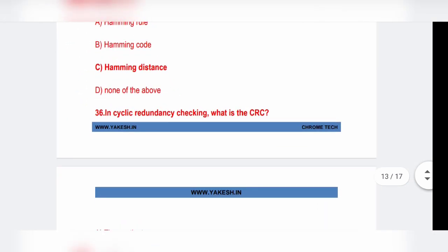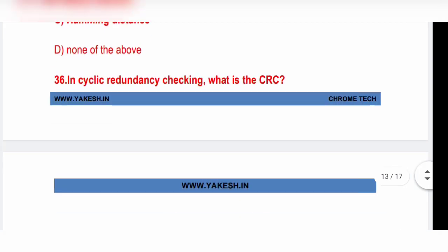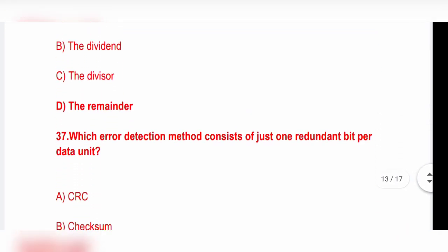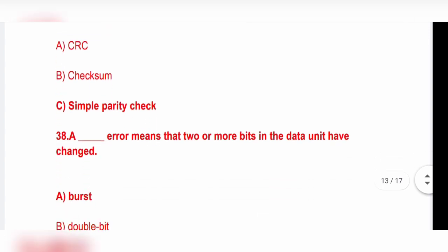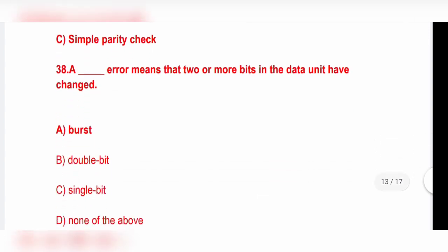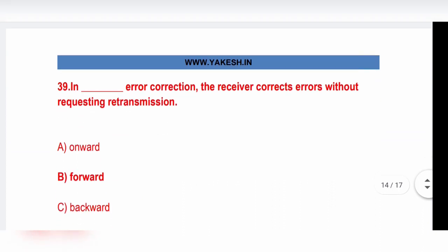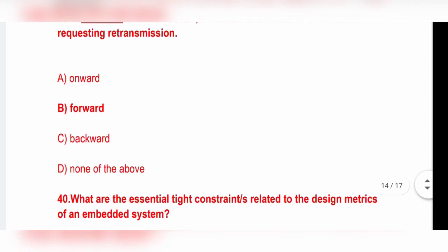In cyclic redundancy checking, what is CRC? The remainder, option D is the correct answer. Which error detection method considers a just one extra bit added with per data unit? Option C, simple parity check. Burst error means that two or more bits in the data unit have changed. Option A, burst is the correct answer. In forward error correction, the receiver corrects error without requesting retransmission. Option B is the correct answer.